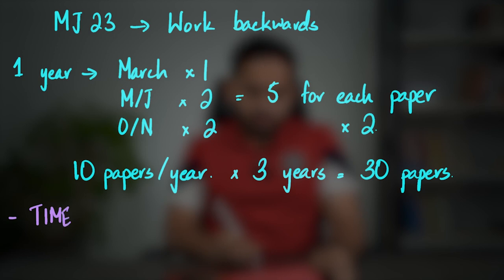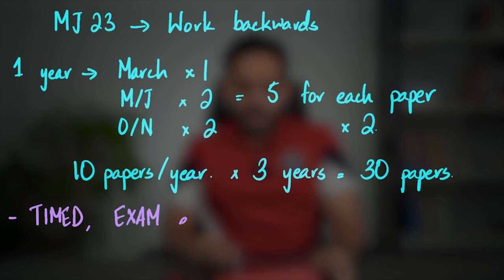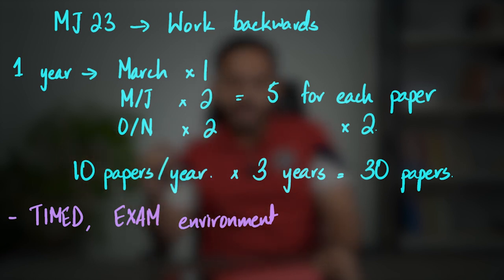When doing yearly practice, make sure you do it in a timed and proper exam environment. Write exactly what time you start and end on the top right of your paper, and try to do it in even less time than the exam allows. For example, P4 is one hour 45 minutes, but once you become proficient, aim to do it in around one hour 20 minutes at home — because exam pressure will naturally push that time up. You can ask a family member to supervise you during this process.